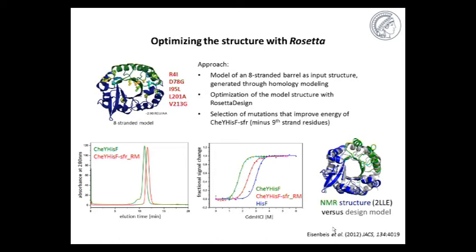We constructed this protein, we constructed the gene and expressed the protein and then analyzed it again with gel filtration and unfolding. And you can see this here now in the lower left, the gel filtration run. You can see a very nice single peak, indicating again a nicely well-folded monomeric protein. What is obvious here also is that this protein elutes later from the column, indicating that this protein is more compact than the original CheY-HISF. Then we analyzed the protein also using guanidinium hydrochloride unfolding in order to test how stable it is and whether it unfolds cooperatively. And you can see here that CheY-HISF with the Rosetta mutations is much more stable than the original CheY-HISF chimera.